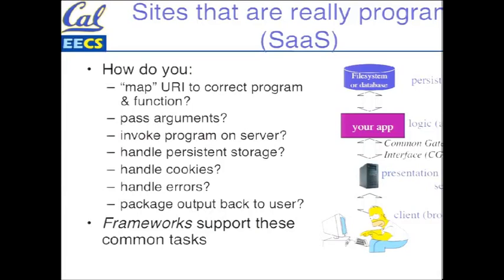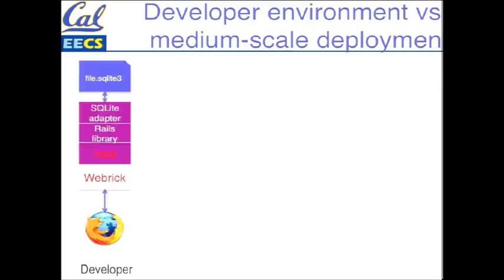Over time, as this architecture became the way things were done, frameworks began to evolve to support these common tasks. Rails is exactly one of those. Surprisingly, this same architecture applies whether you're developing on your own machine or deploying to the cloud. If you're on your own machine, you might interact with a local web server — we're gonna use WEBrick in our exercises. The application tier in purple is gonna be the Rails library and an application server called Rack, and a simple database called SQLite that's just enough for local development.